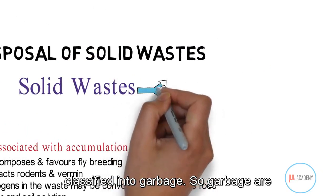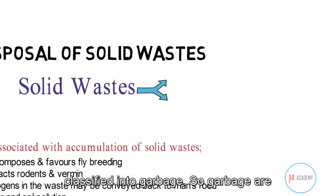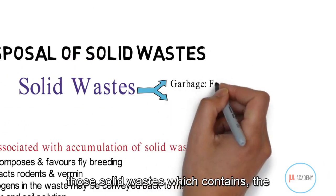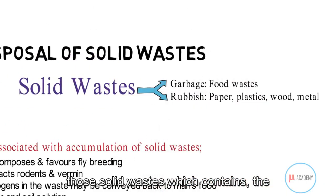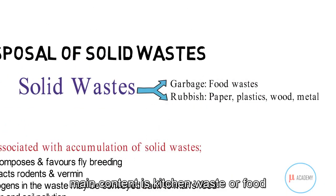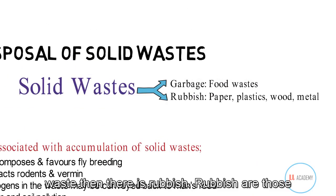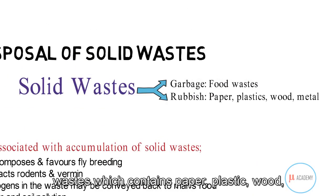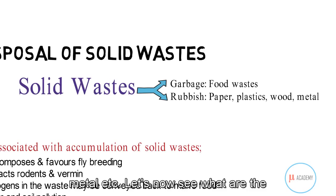Solid waste can be classified into garbage and rubbish. Garbage refers to solid waste whose main content is kitchen waste or food waste. Rubbish refers to waste which contains paper, plastic, wood, metal, etc.